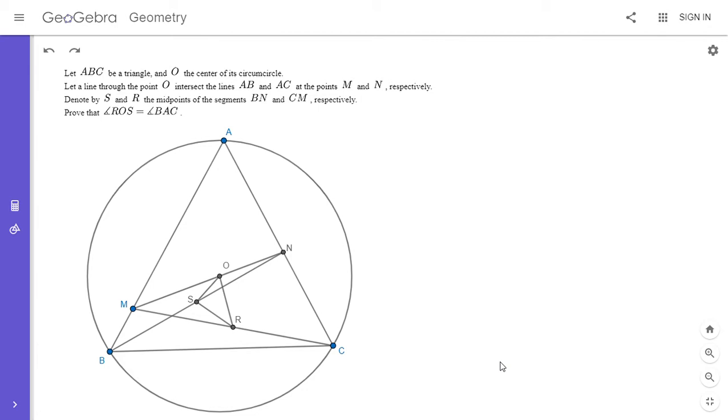It turns out that triangle ROS is similar to triangle MAN. I noticed this with paper and pencil. I feel like I got a little lucky, but it seems like it might be true looking at the diagram in GeoGebra.